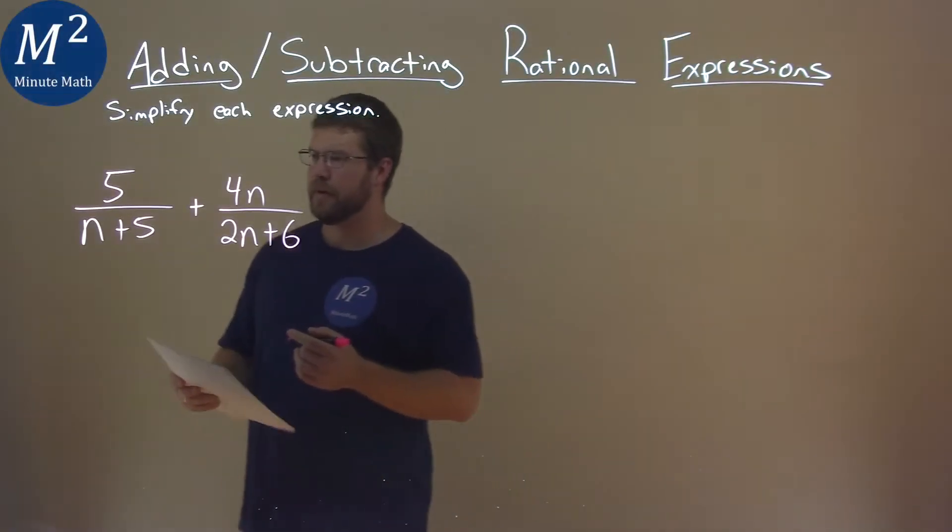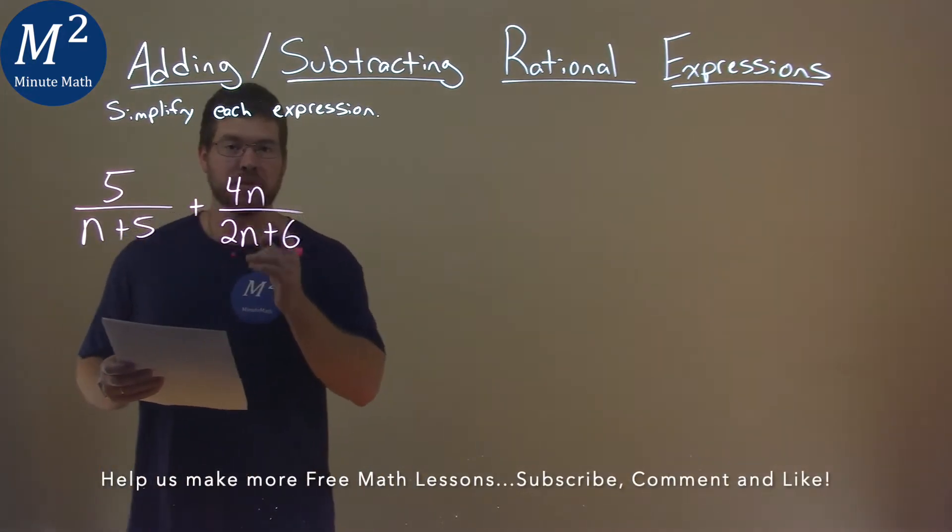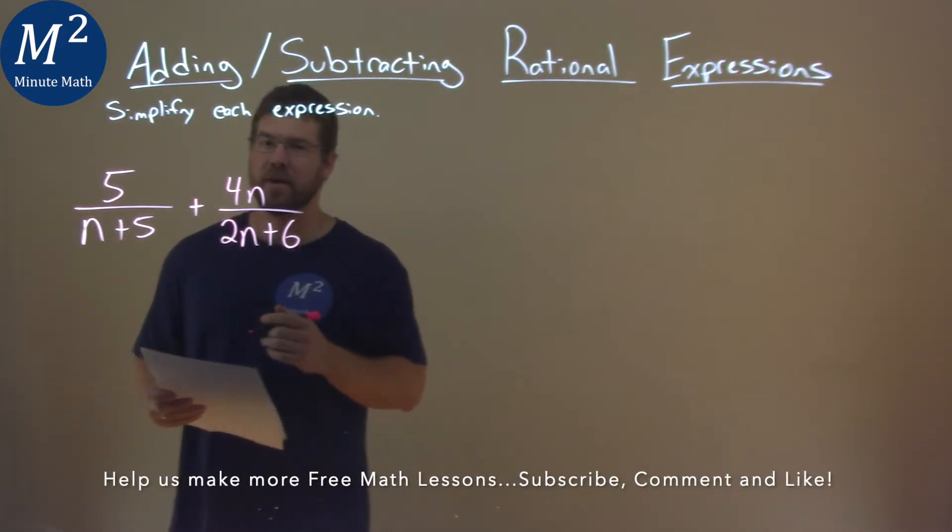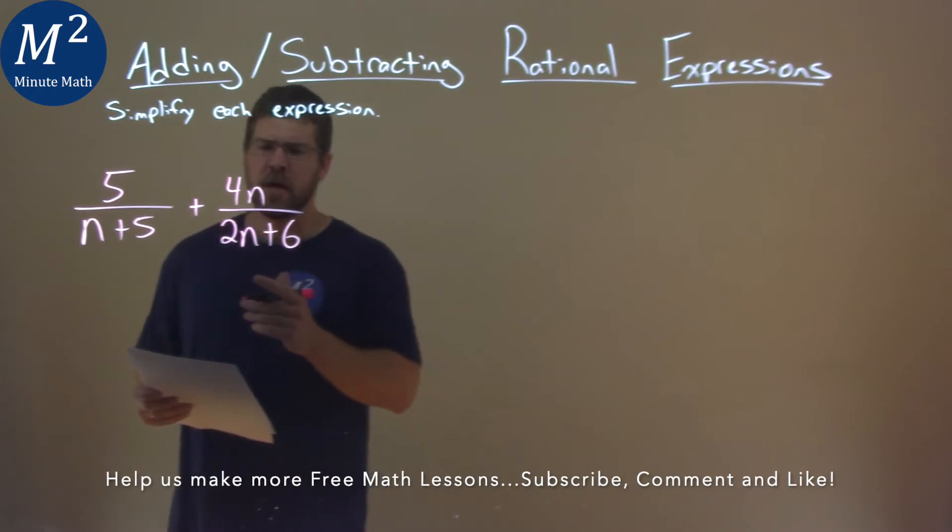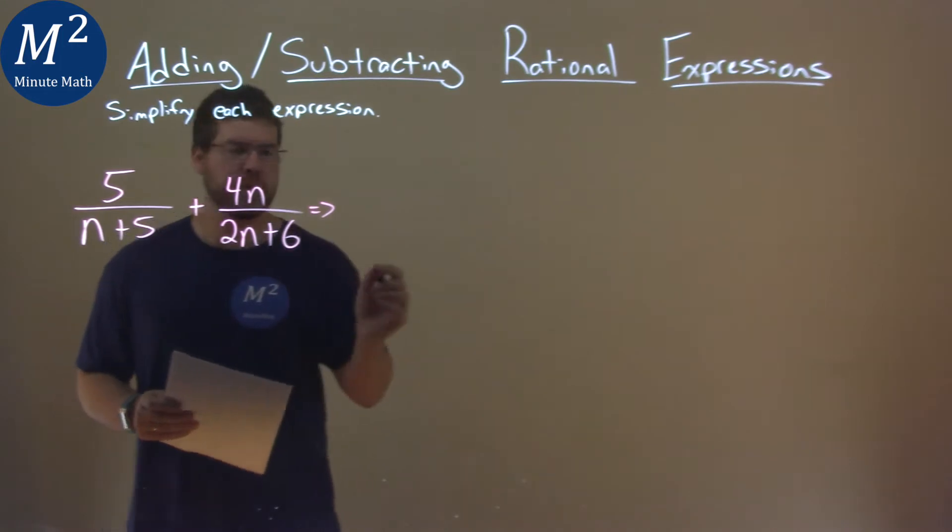We're given this problem right here: 5 over n plus 5, plus 4n over 2n plus 6, and we've got to simplify this expression. One thing we notice, our denominators aren't the same, so we have to get the same denominator.